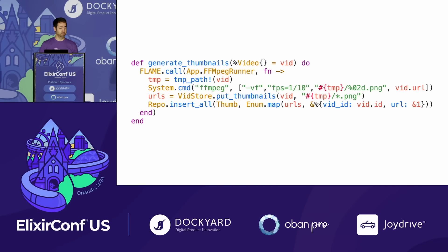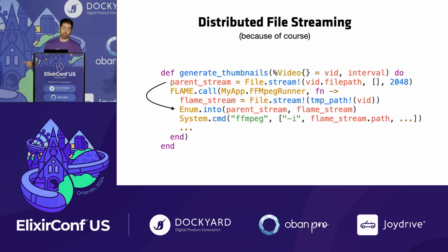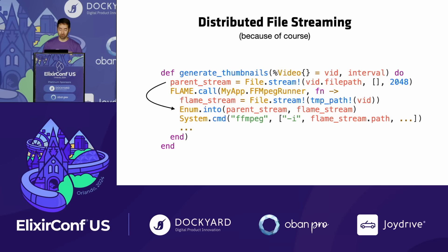We have the full BEAM at our fingertips. It's not some nerfed Elixir runtime where you can show the golden path but the moment you want something complex you go off the beaten path. It's just your app running on distributed Elixir. If you need to get a file from the parent to the child, you write two lines of code and we're streaming the file from the parent node to the child node — because IO in Elixir and Erlang is distributed out of the box, it's process-based.